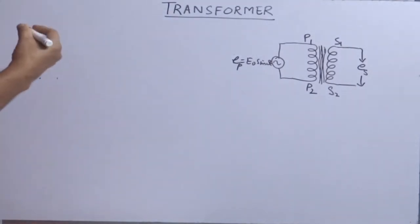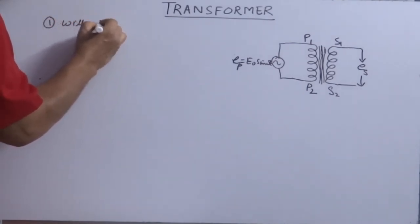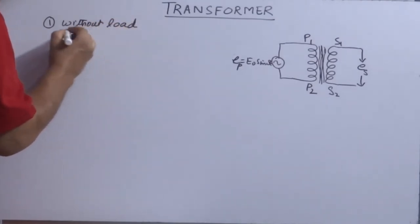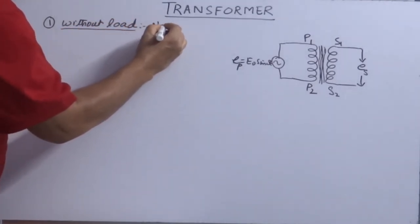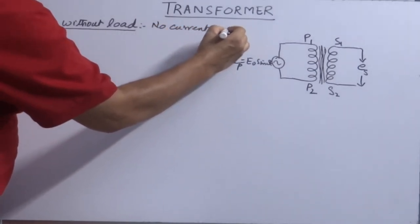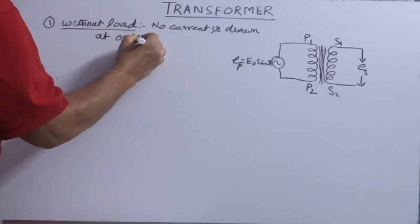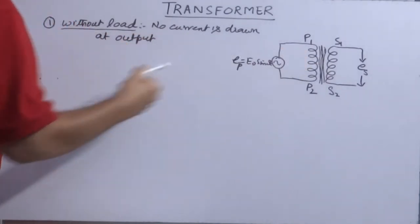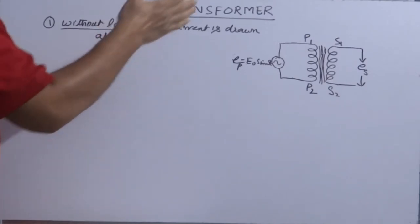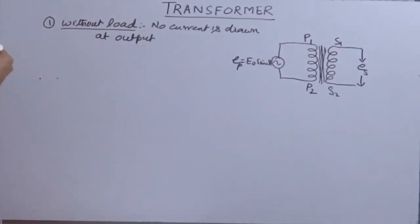Now transformers are operated in two ways. In working, one is without load. Without load means no current is drawn at output. What does it mean? You can simply measure EMF. You cannot measure current. How will you obtain current at the output? By connecting through some resistance.